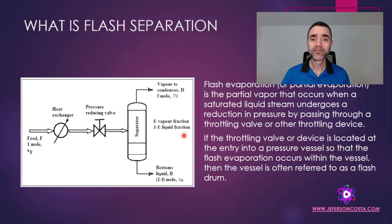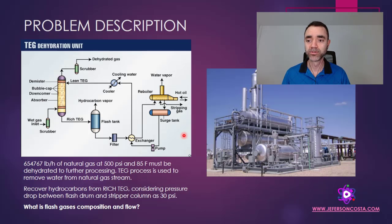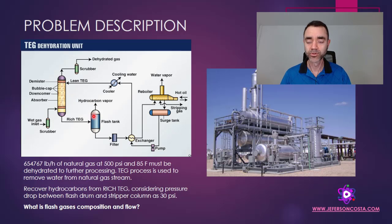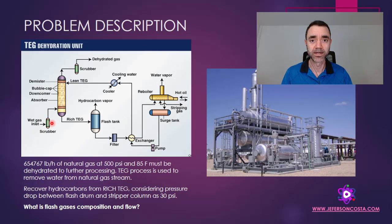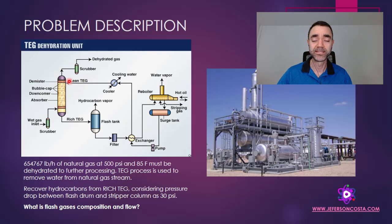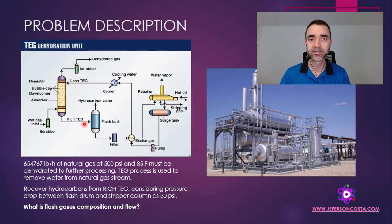Where is flash separation used in real life? The TEG process used for the dehydration of natural gas is a classical example. You can see here a flash separator: the wet natural gas goes into a scrubber to remove free water, then the wetted gas enters the absorber column — also known as the contactor column — and the lean TEG, which is TEG with very high purity, enters at the top of the column and goes to the bottom, removing the water from the natural gas.